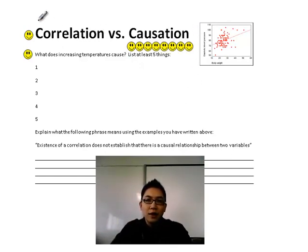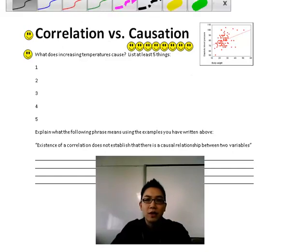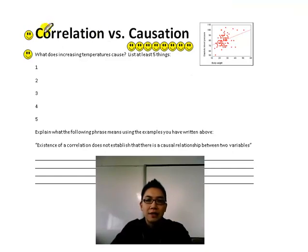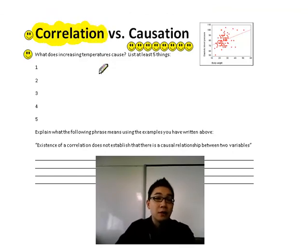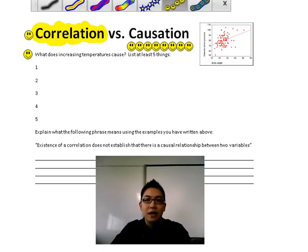Is one thing actually causing the other thing to happen? Sometimes you can just have things that are correlated. Correlated means they may show evidence of some kind of link. As one thing increases, the other thing increases. As one thing increases, the other thing decreases. But is there necessarily a cause?